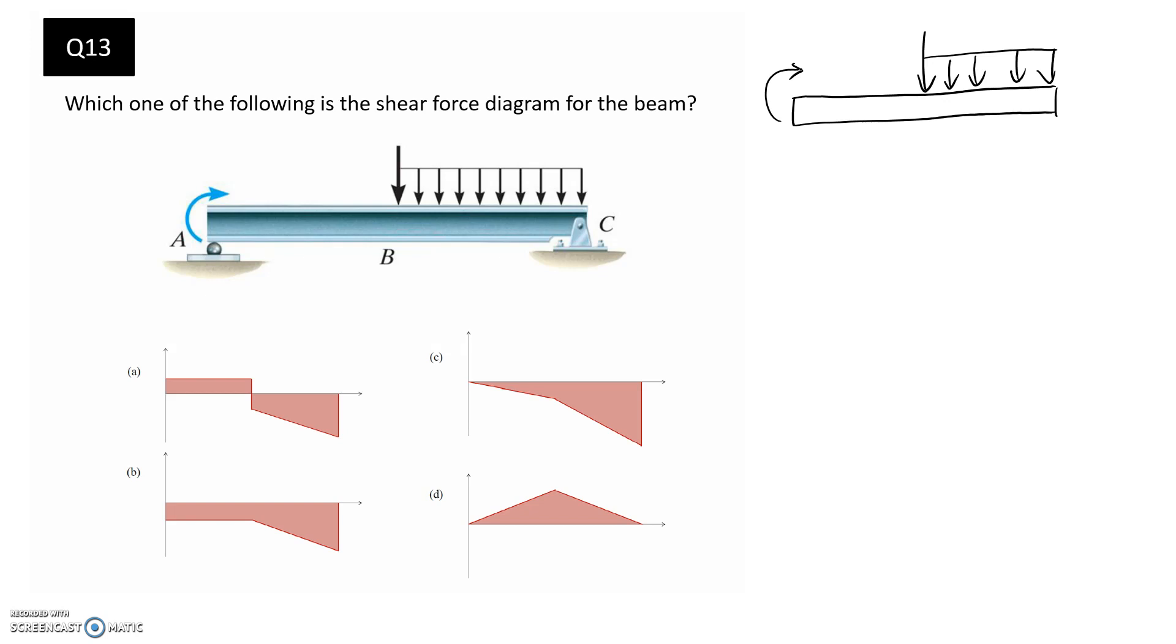So now we need to replace our supports with the equivalent reactions. So at A here, we have a roller support, which means it just has the one reaction, which is perpendicular to the surface. So in this case, it's going to be a vertical force. And then at C, we have a pin joint, and we know a pin has a horizontal and a vertical force. So that's going to be our free body diagram.